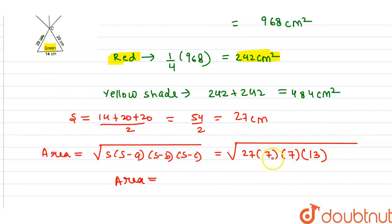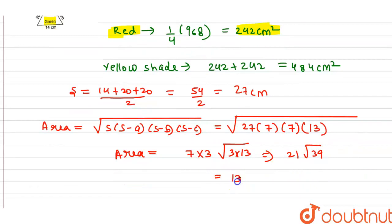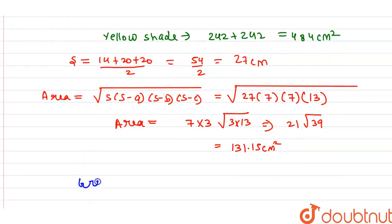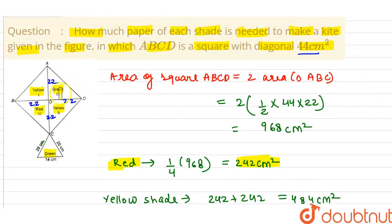Continuing the Heron's formula: area = square root of 27 × 7 × 7 × 13, which simplifies to 21 × square root of 39, giving approximately 131.15 cm². So the green shade total is 242 plus 131.15, which equals 373.15 cm². This is the green shade area.